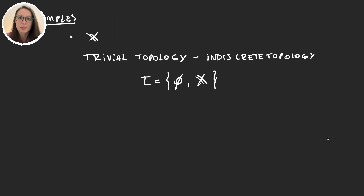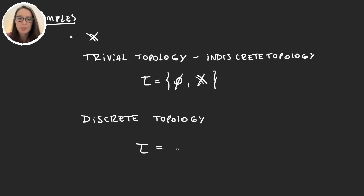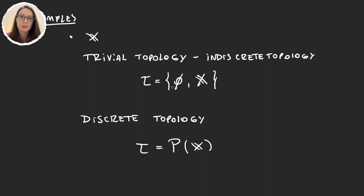The other topology we can think of immediately is the discrete topology, defined simply as the parts of X — the power set P(X). It's obvious this satisfies all properties, because P(X) is the collection of every subset of X, so any arbitrary union or finite intersection of subsets of X is also a subset of X and will be in P(X).